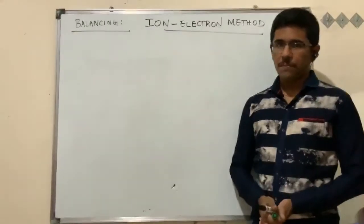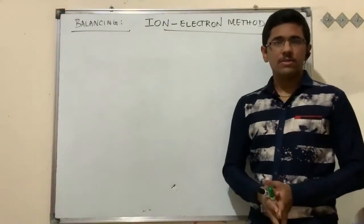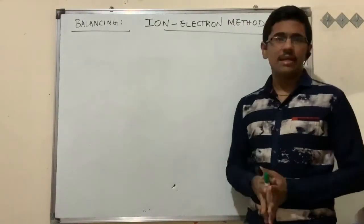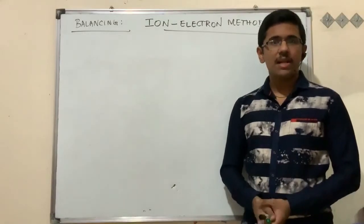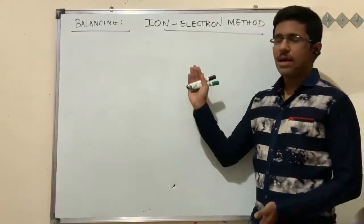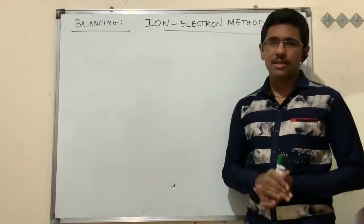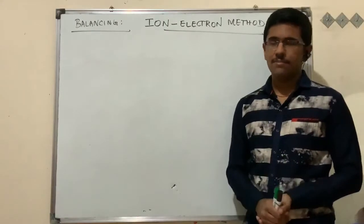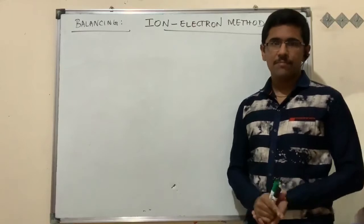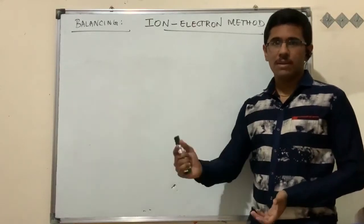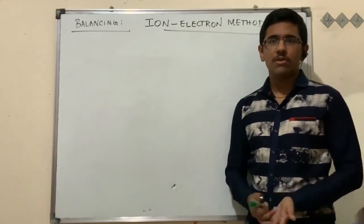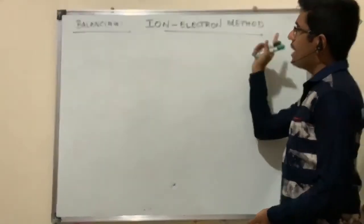This is a very important topic: balancing redox reactions. We will study two different techniques. The first technique is the ion-electron method and the second is the oxidation number method. Both are similar to each other; one is a shorter technique and one is slightly lengthier. The ion-electron method is slightly lengthier, but in examinations they may specify which method to use.